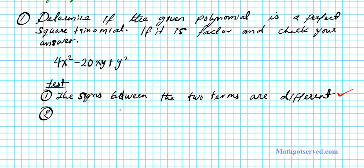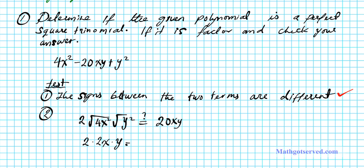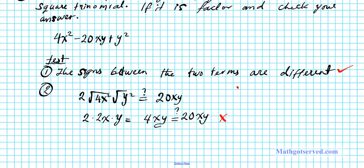Now secondly, if we double the square root of the first and the last term, do we get the middle term? The square root of 4x squared is 2x, and the square root of y squared is y. Multiplying them together gives 2 times 2x times y, which equals 4xy. Is 4xy equal to 20xy? The answer is no. So our conclusion is that 4x squared minus 20xy plus y squared is not a perfect square trinomial.